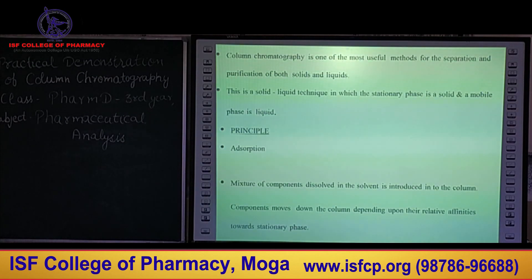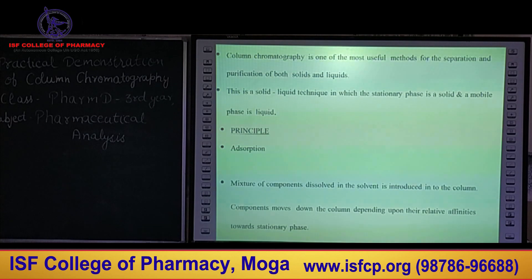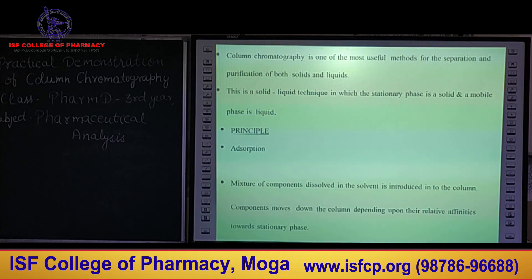Column chromatography is one of the most useful methods for the separation and purification of both solid and liquid mixtures. It is a solid-liquid technique in which the stationary phase is a solid and the mobile phase is a liquid. There are other techniques like solid-gas chromatography and solid-liquid chromatography like HPLC. The principle for column chromatography is adsorption.